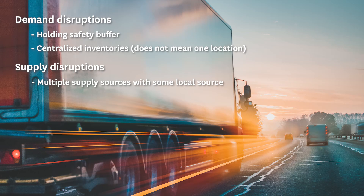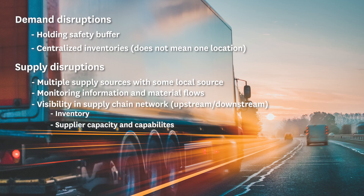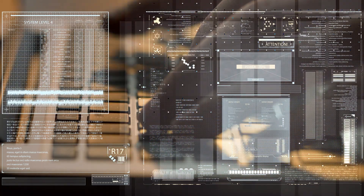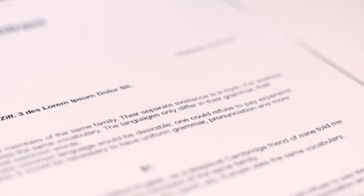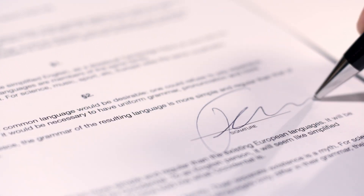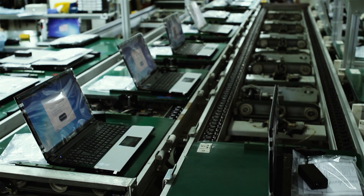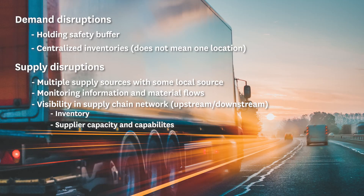The second thing firms have done is to carefully monitor information and material flows and the supplier network. This requires visibility into the entire supply chain network, both upstream and downstream — understanding where inventory is in the supply chain, supplier capacity, supplier capabilities, etc. Some information may be private, but you can have visibility into your own company's inventory, distributors, or retailers. When you have long-term contracts with suppliers, they are your partners and you can have sufficient visibility. This has been true for a long time in auto and electronic supply chains, which has helped them tremendously in dealing with disruptions and being efficient.